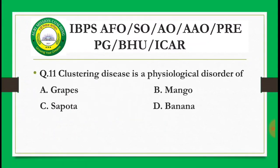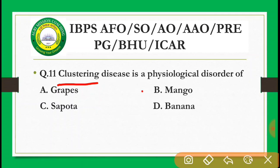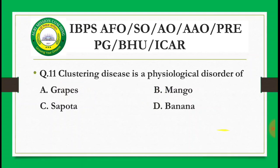Next question from horticulture: Clustering disease is a physiological disorder of which fruit? Options are: grapes, mango, sapota, banana. The correct answer is mango — clustering is a physiological disorder of mango. This is an important question.